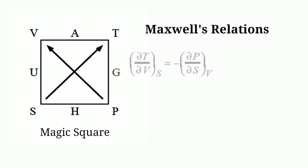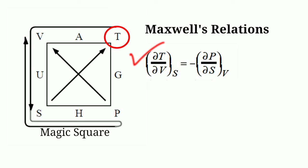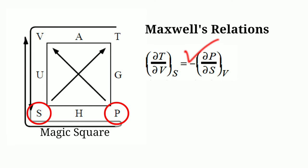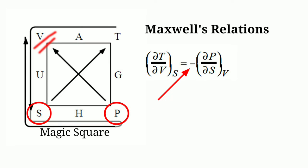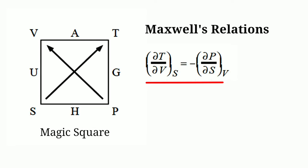To derive Maxwell's first relationship we have to move on in the magic square like this: partial derivative of T with respect to V at constant S is equal to partial derivative of P with respect to S at constant V. But since P is at the arrow tail, put a minus sign on the right hand side. So this is Maxwell's first relationship.